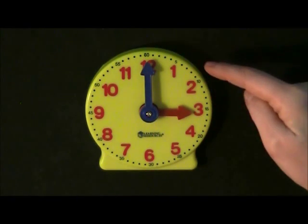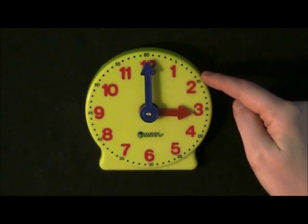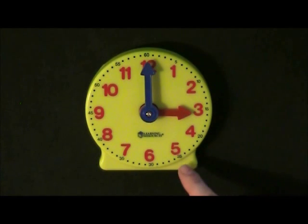A clock face has large numbers for the hours, and some clocks have smaller numbers for the minutes, like these blue numbers here.